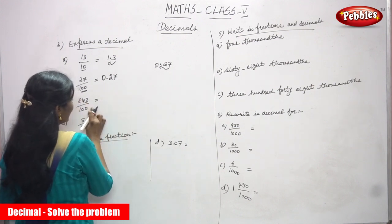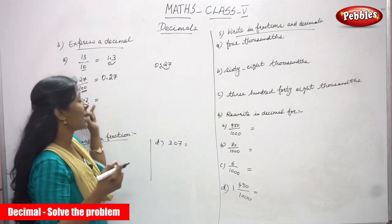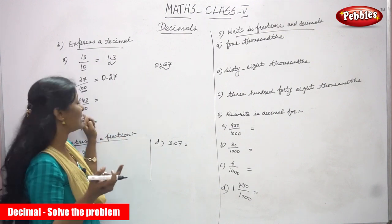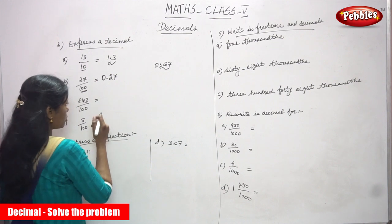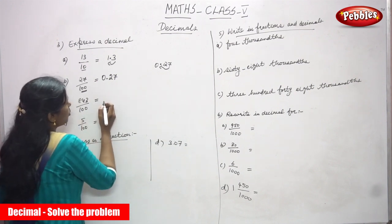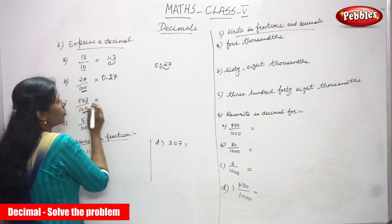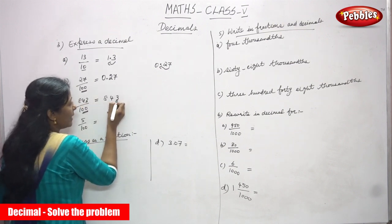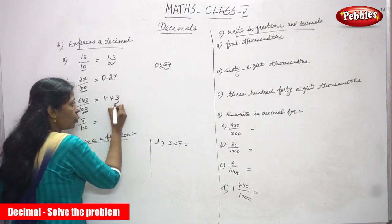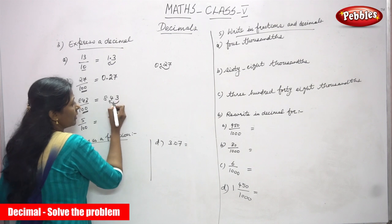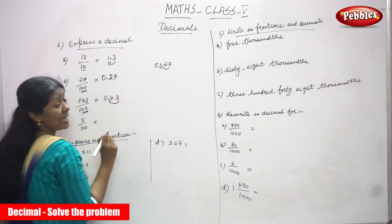Next is 843 divided by 100 — this is an improper fraction. 843 is the numerator and 100 is the denominator. The denominator has 2 zeros, so you move 2 digits from right to left and put the point. The answer is 8.43.